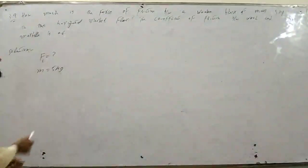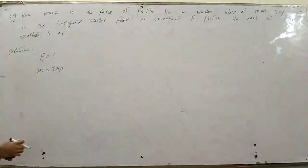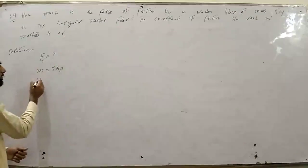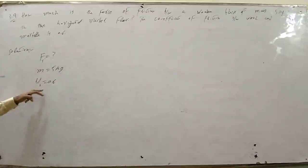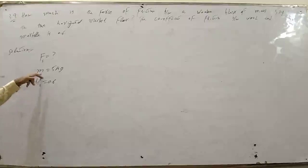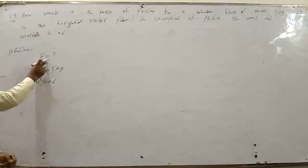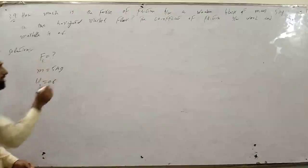On the horizontal marble floor पर पड़ा था। Coefficient of friction between wood and marble - mu S दिया हुआ 0.6। Coefficient of friction भी दी हुई, mass भी दिया हुआ उस object का जो box है। Frictional force Fs find करना है।